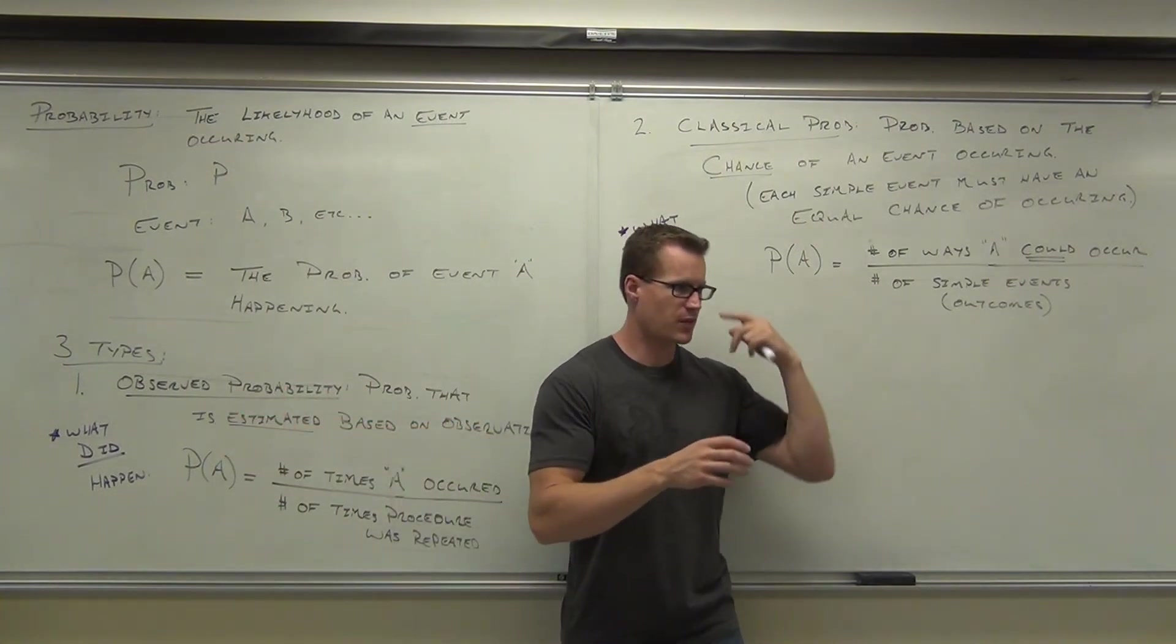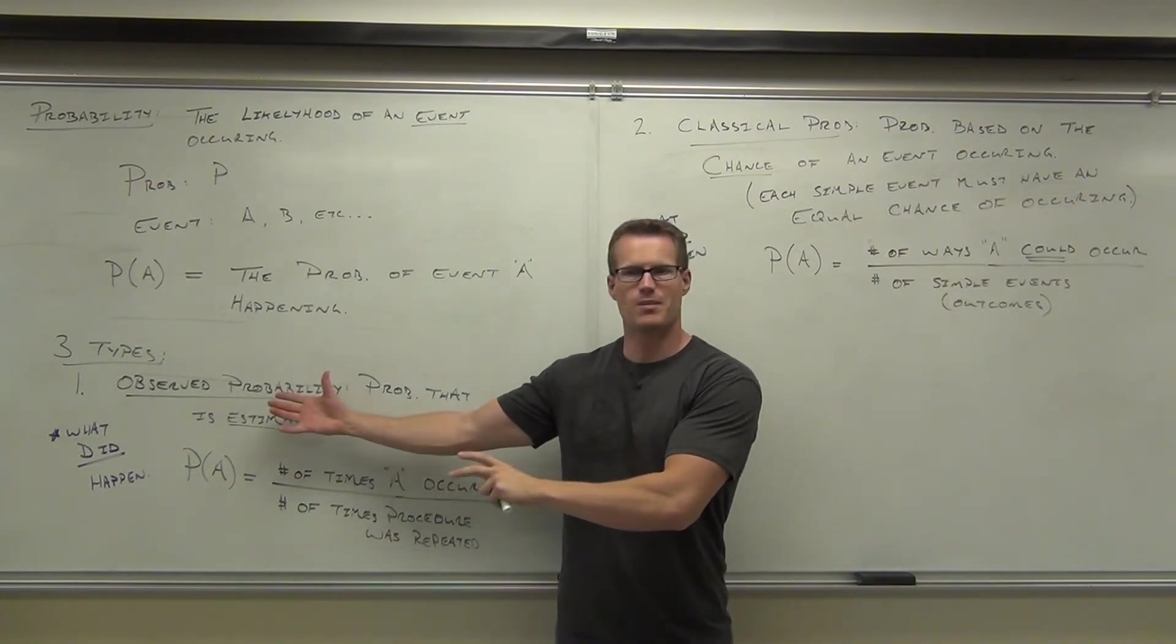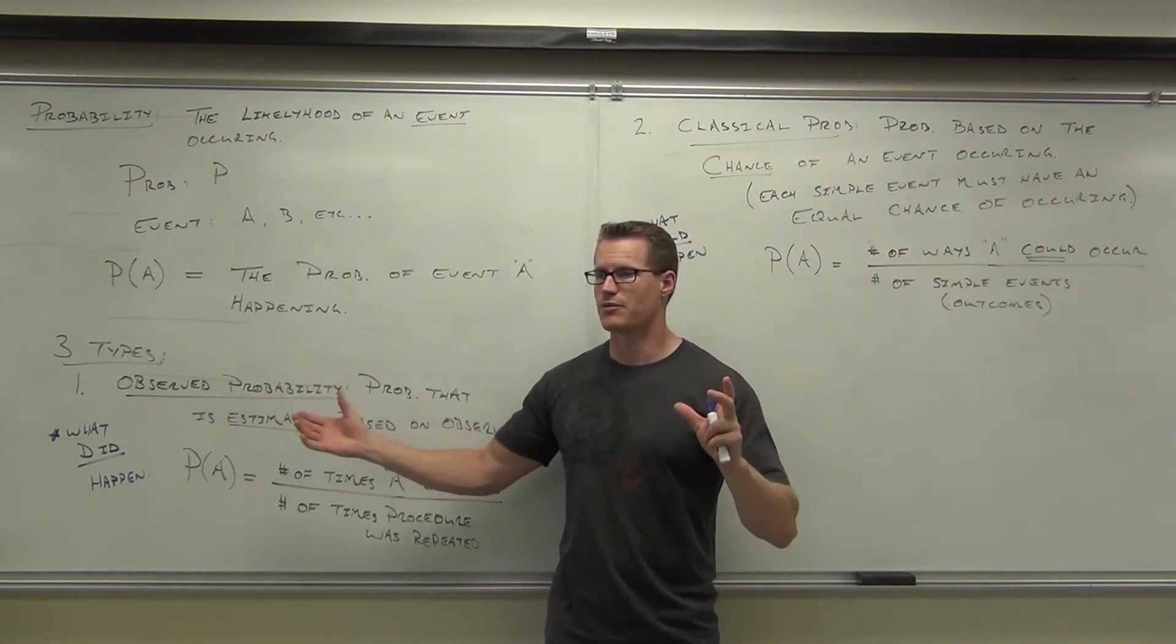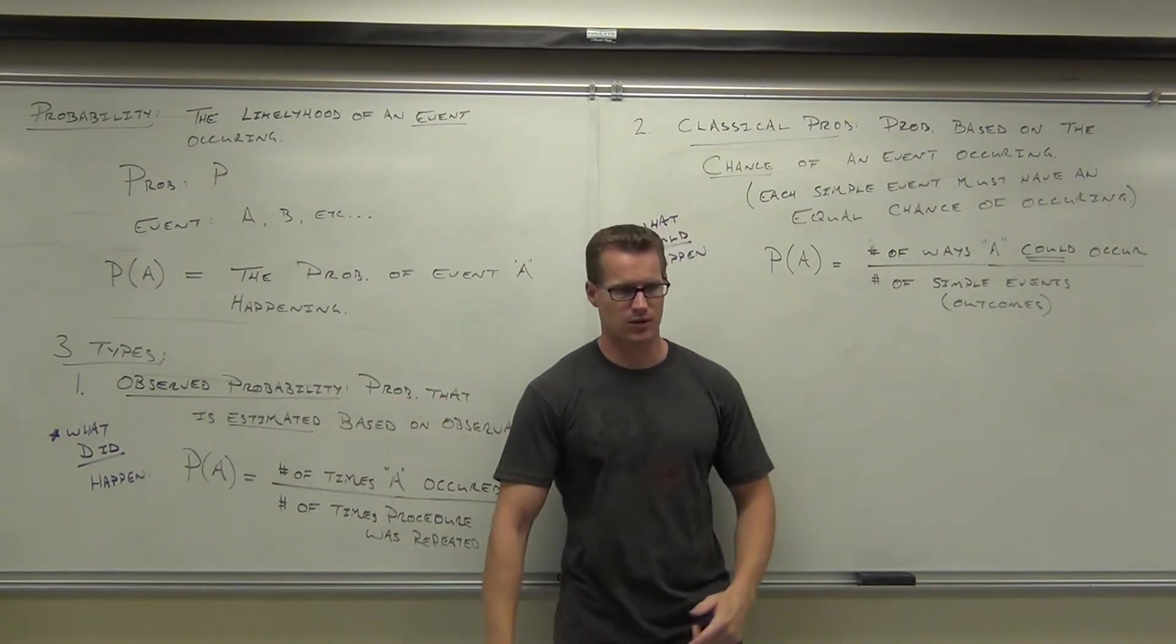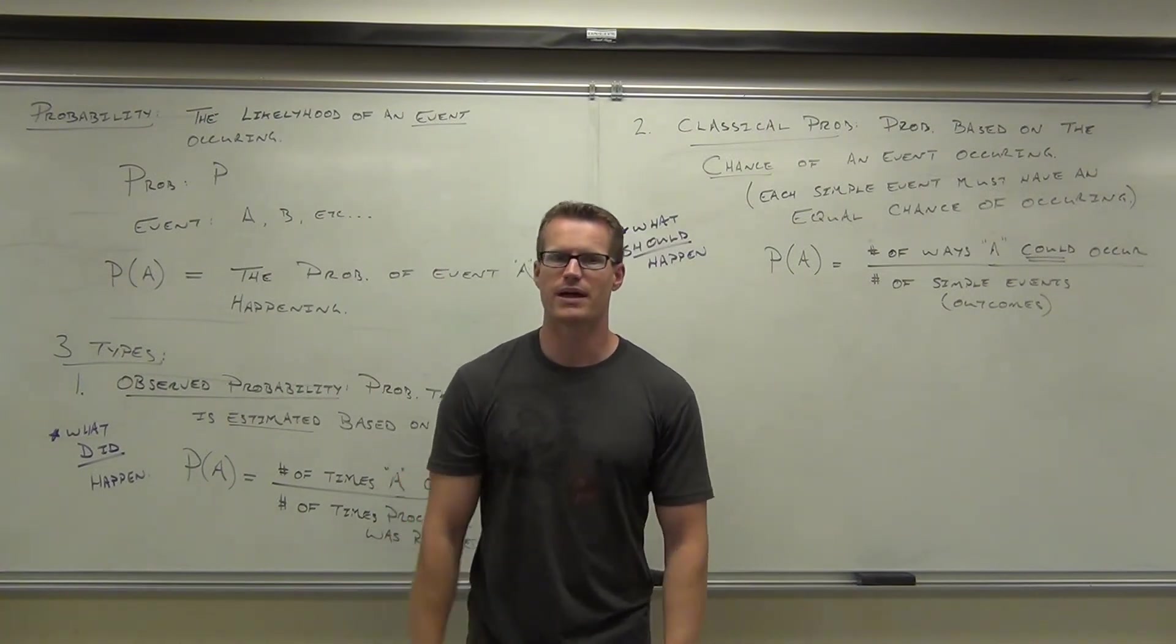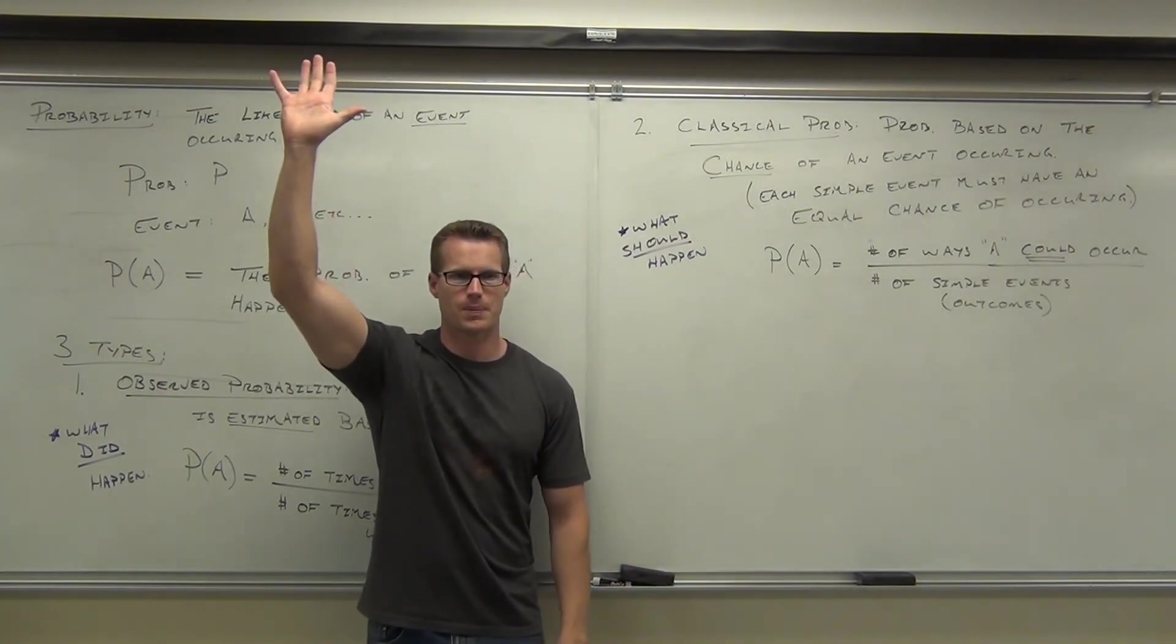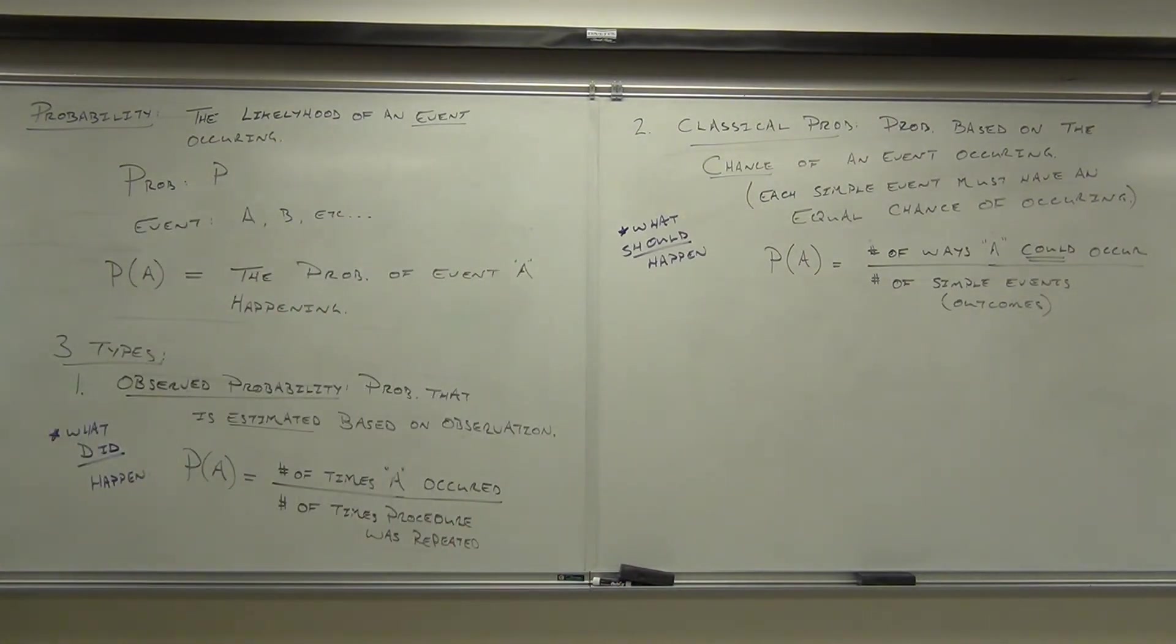You can think about the probability. It should be five out of ten. You can do the probability. It might not be five out of ten. Those things could line up, but they don't have to. The act of doing that procedure, that's observed and calculated. The act of just thinking about it and figuring out what should be, that's the classical. The last thing we have to talk about is called subjective probability.